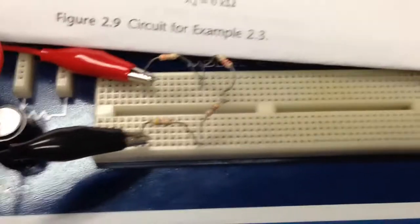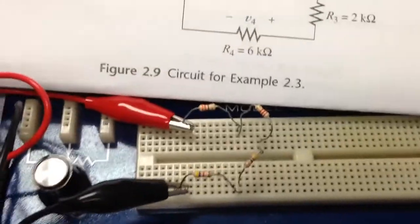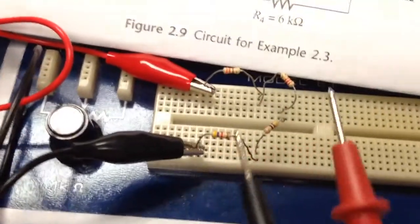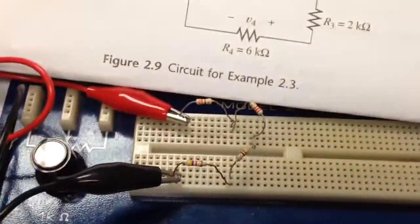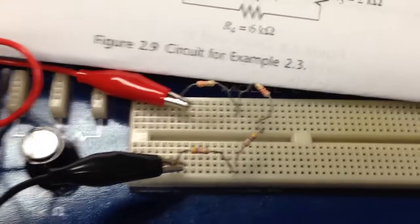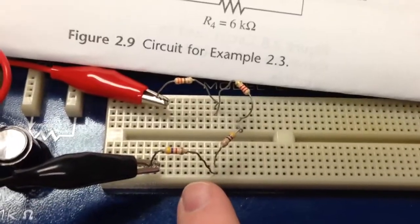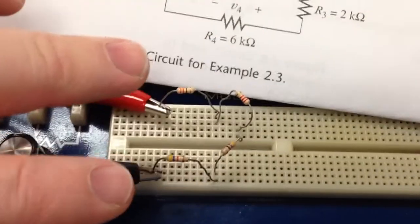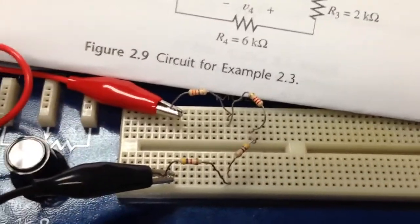As you measure the voltage drop across any of these resistors, you'll notice that the voltage drop across each one is a fraction of the power supply voltage.